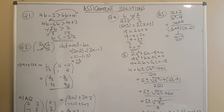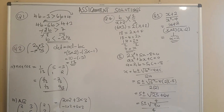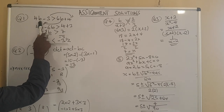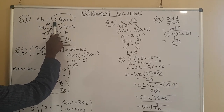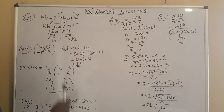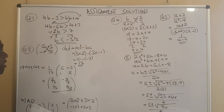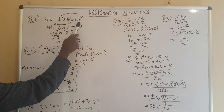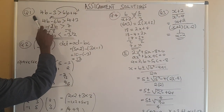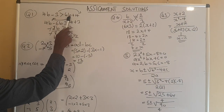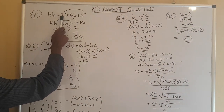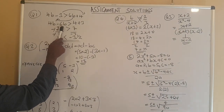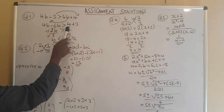Question one was based on the topic called inequalities, which features most of the time in examinations. The question was: 4b minus 3 is greater than 6b plus 4. The technique here is to collect like terms together. So 6b will come to this side and negative 3 will go to the other side, giving us 4b minus 6b is greater than 4 plus 3.